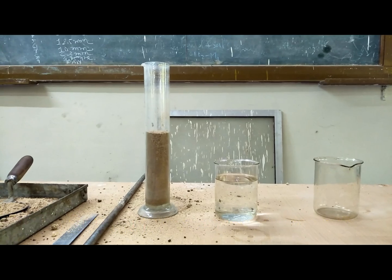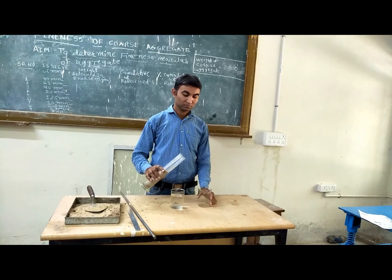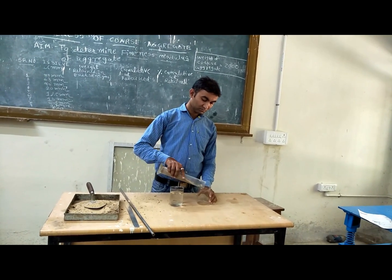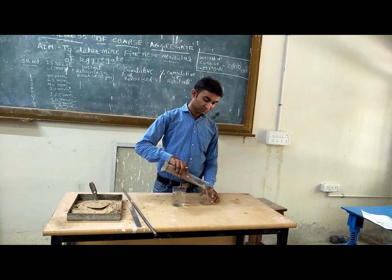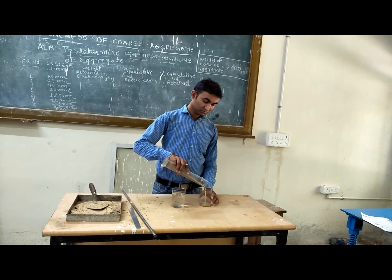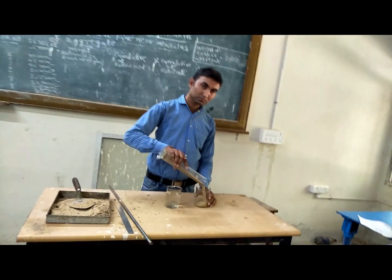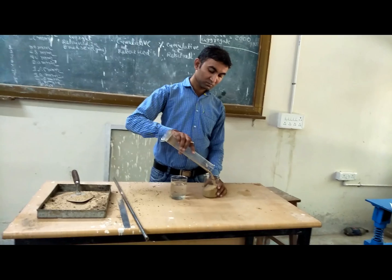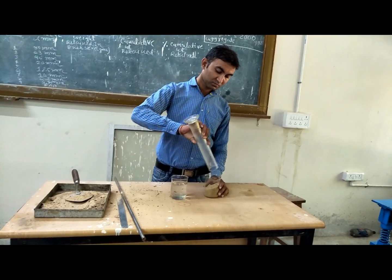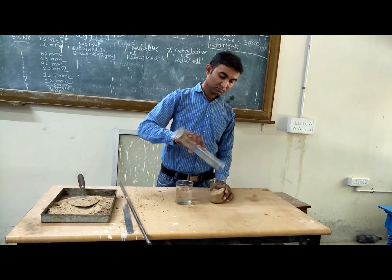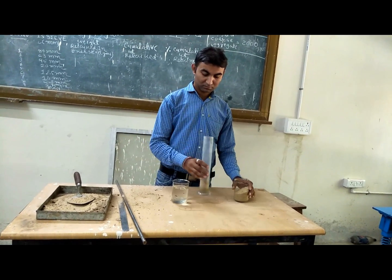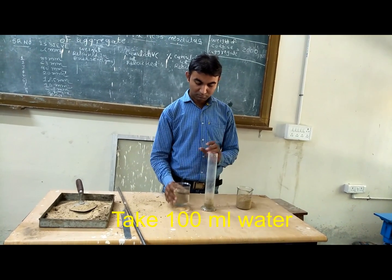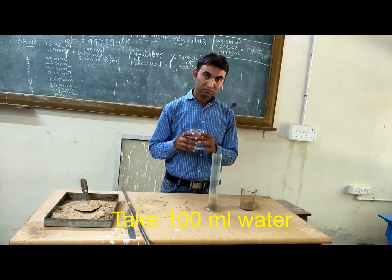After taking 200 ml of fine aggregate, put it into the empty beaker. Then take 100 ml of water in the measuring jar.